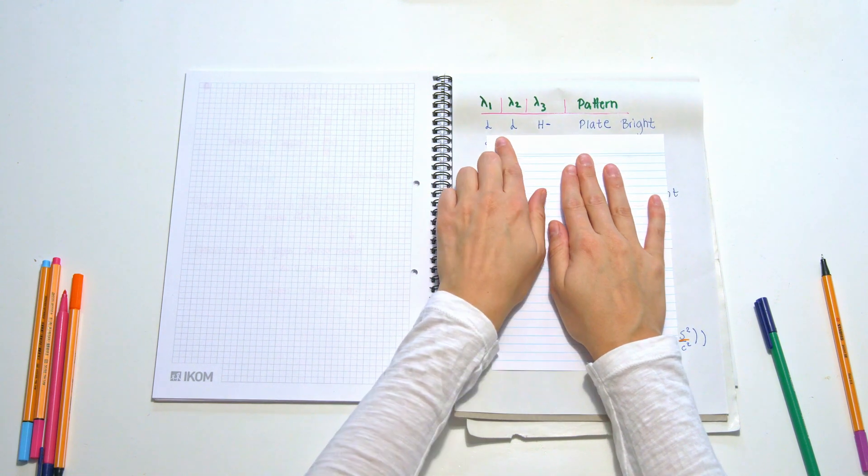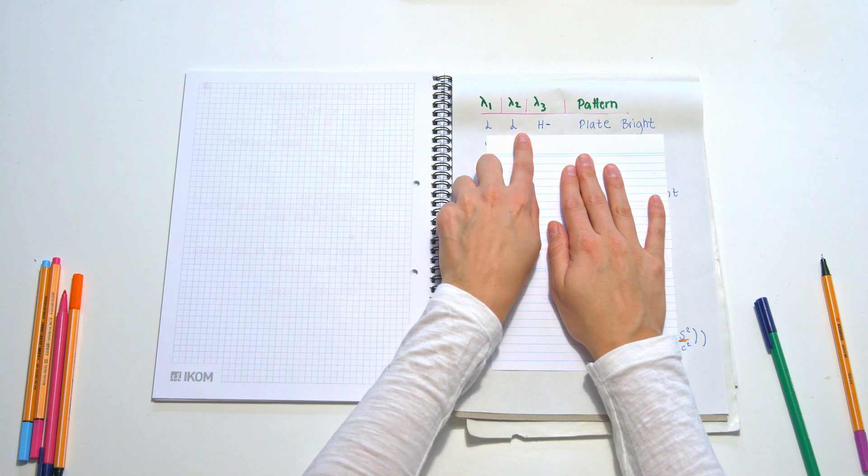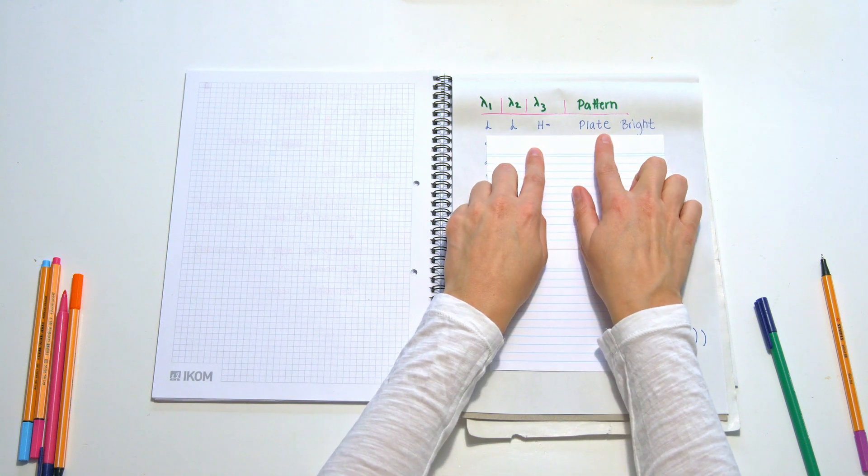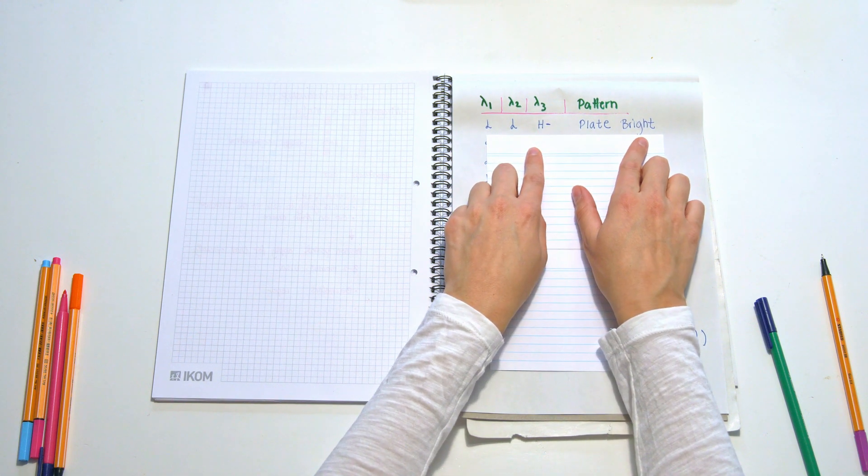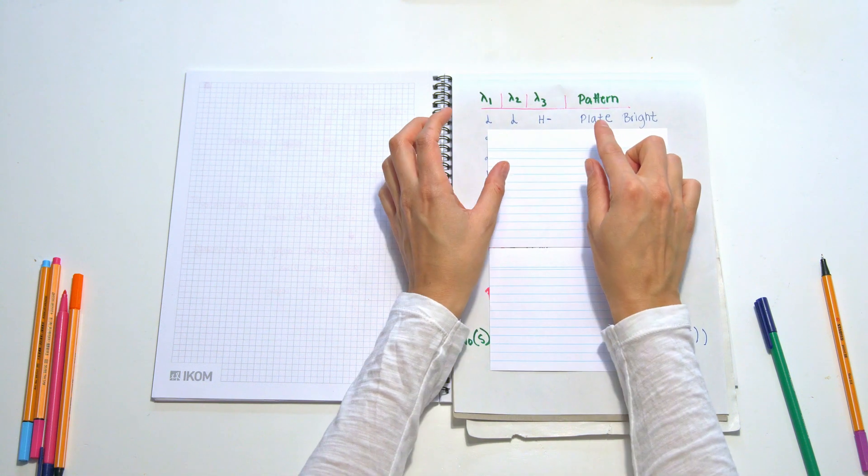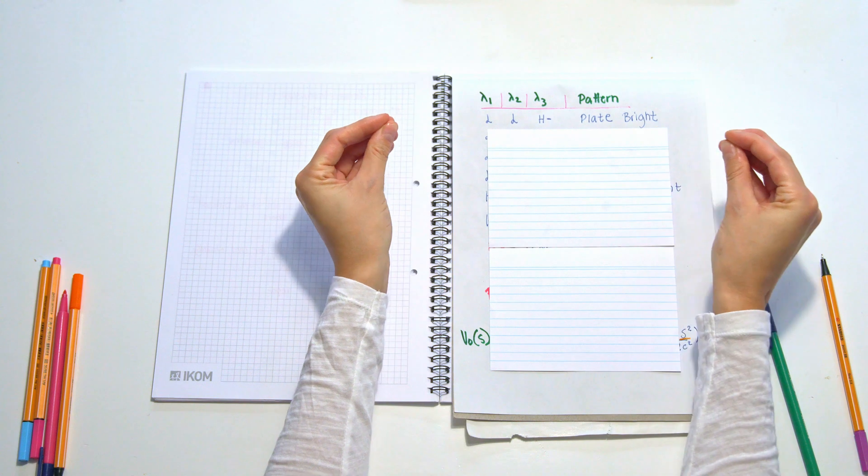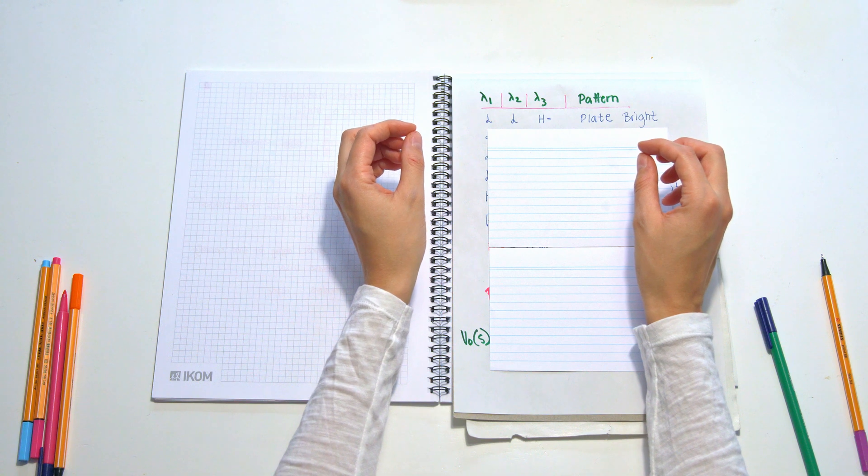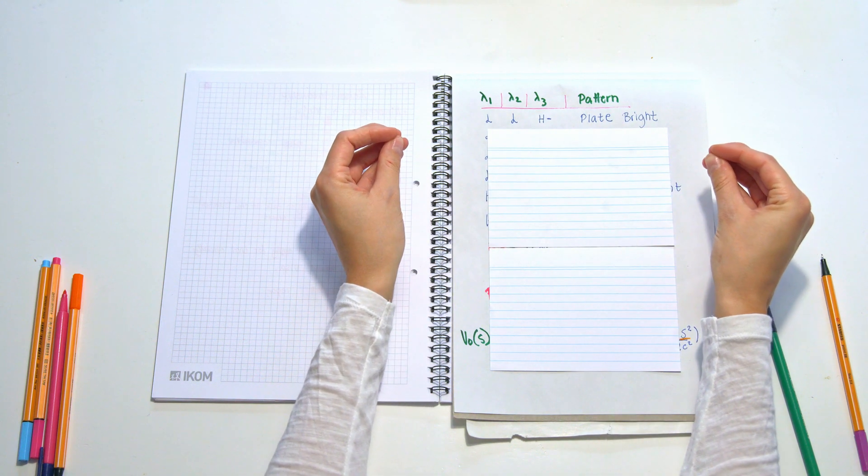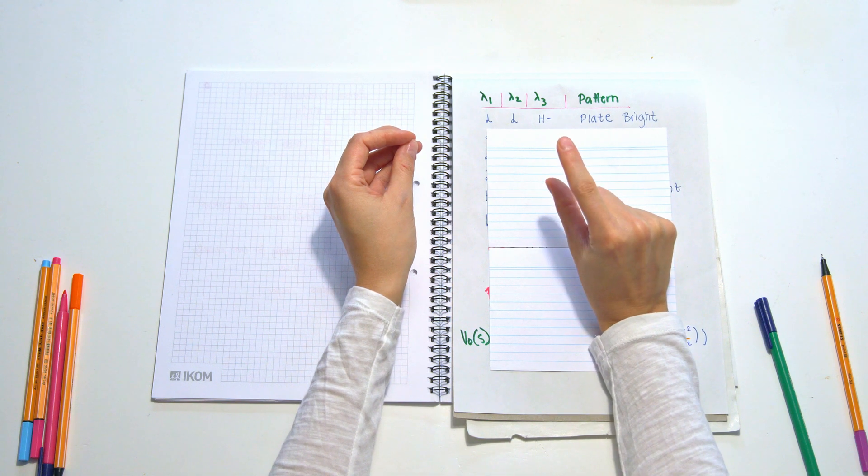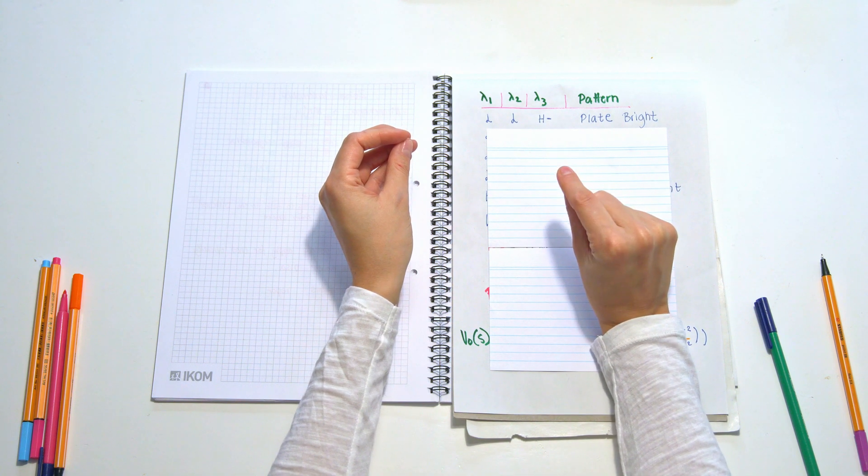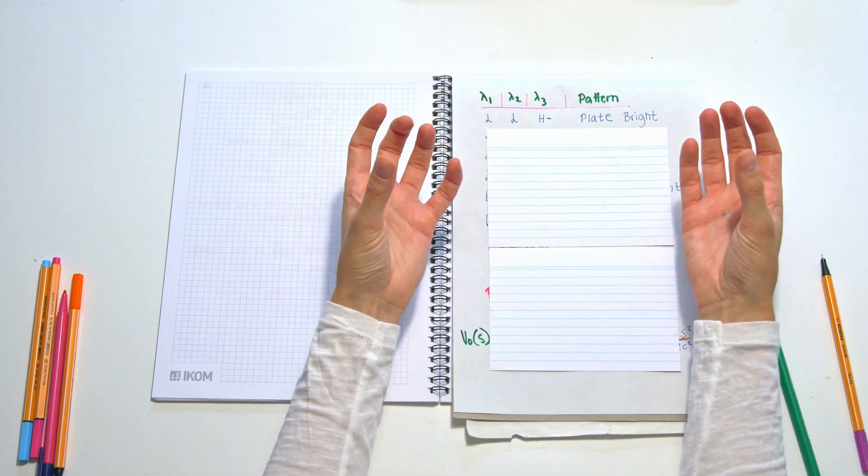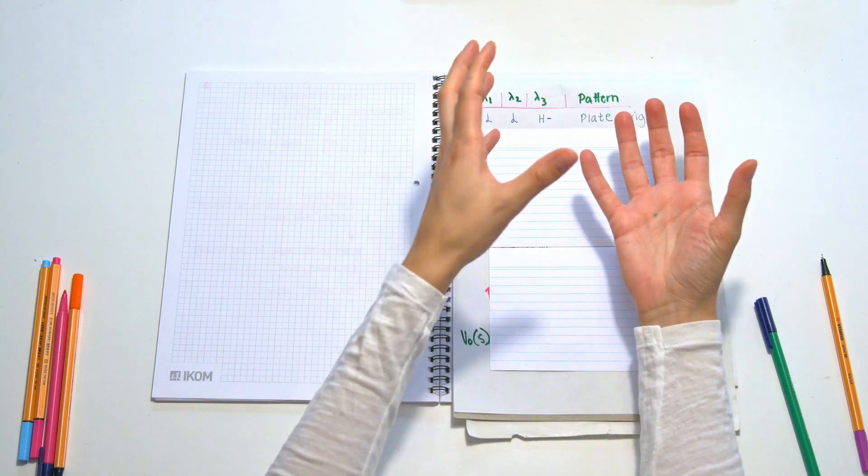We look at the different values. For example, if lambda 1 and lambda 2 have low values and lambda 3 has a high but negative value, we know that it is a plate structure and that it is bright. When lambda 1 is a low value we know that a is big. We also know that b is big, but we have a very low lambda 3, so it's basically like a thick pancake that we have.